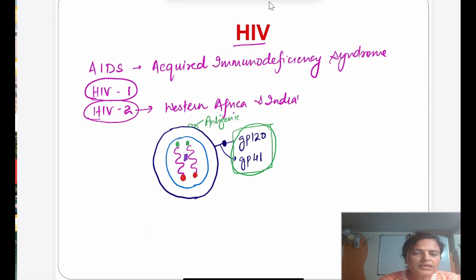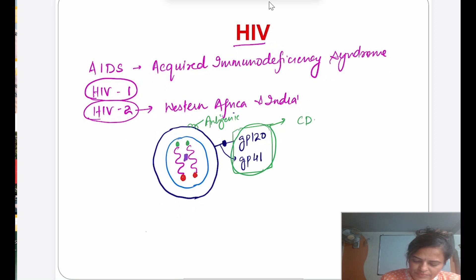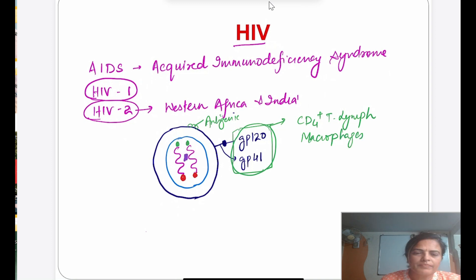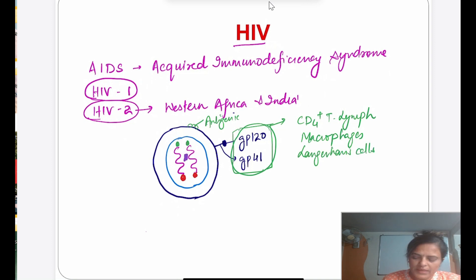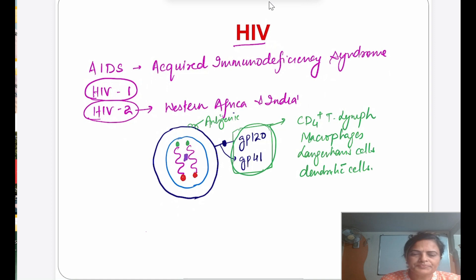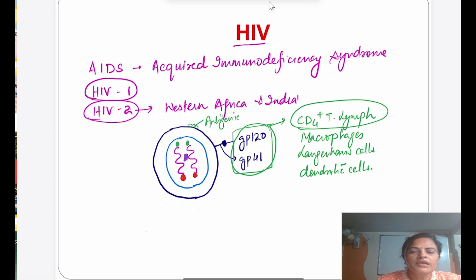The virus binds with host cells. The most common host cell is CD4-positive T lymphocytes, then macrophages, then dendritic cells of the CNS. But the most common site is CD4-positive T lymphocytes.